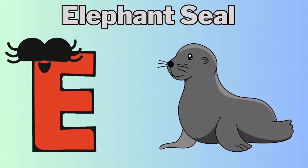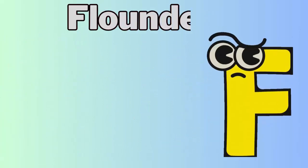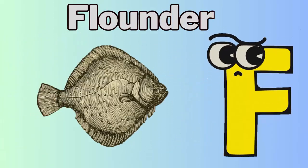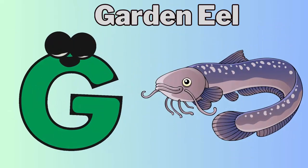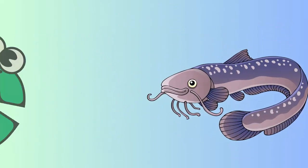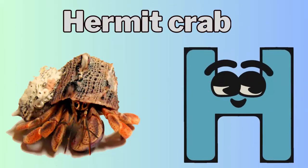E for elephant seal, F for flounder, G for garden eel, H for hermit crab.